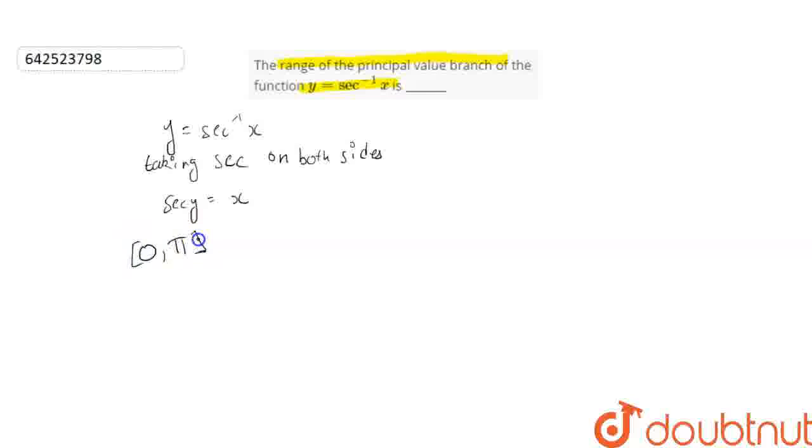But we know that secant pi by 2 is not defined. How? Because cos pi by 2 is 0.